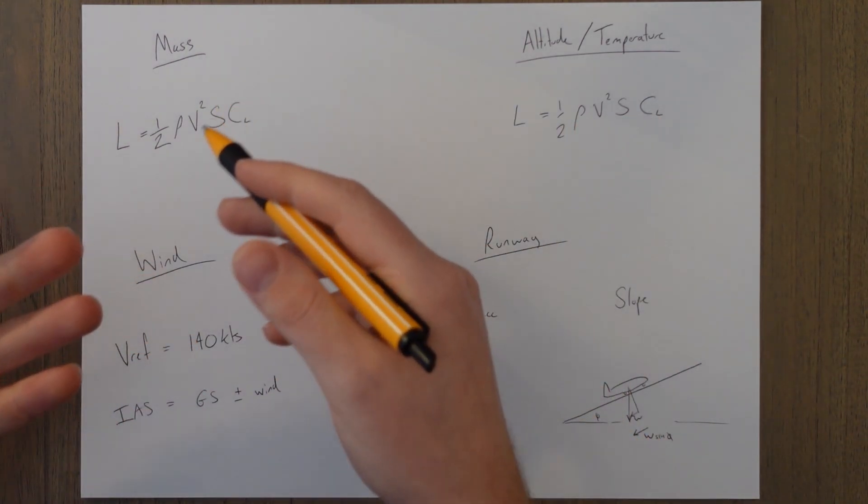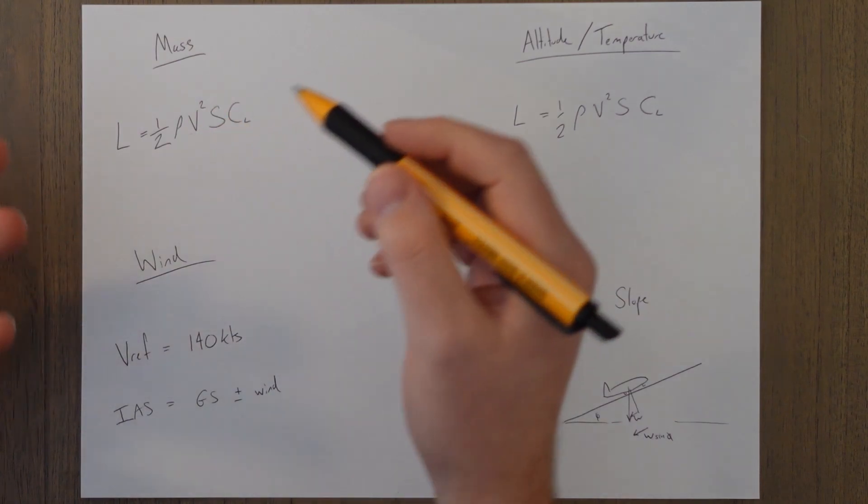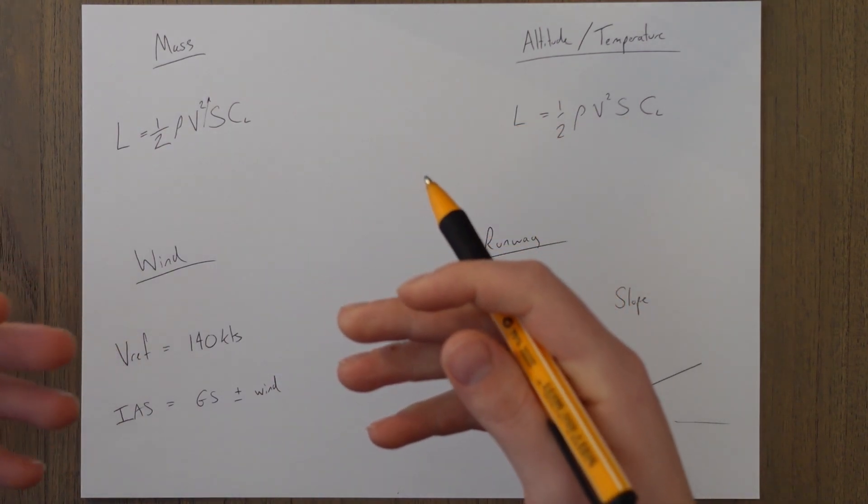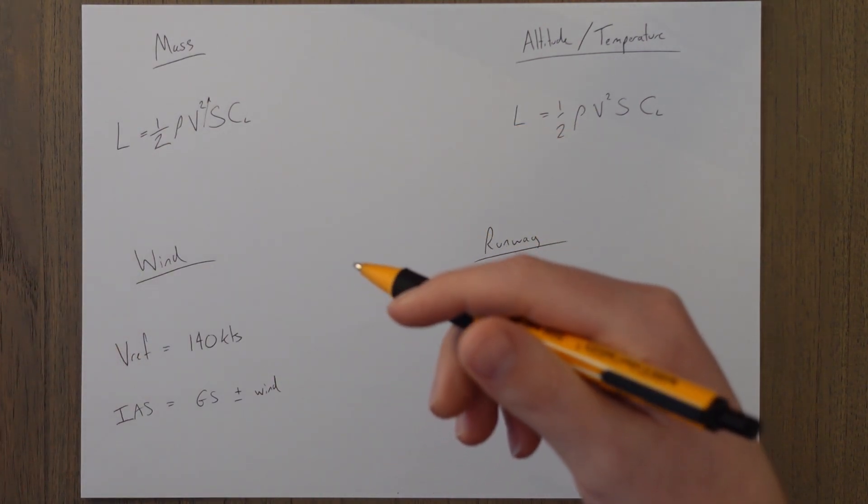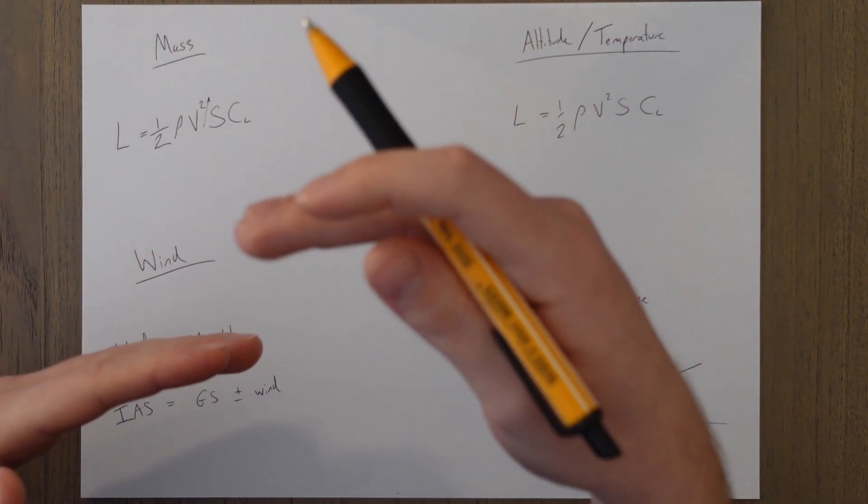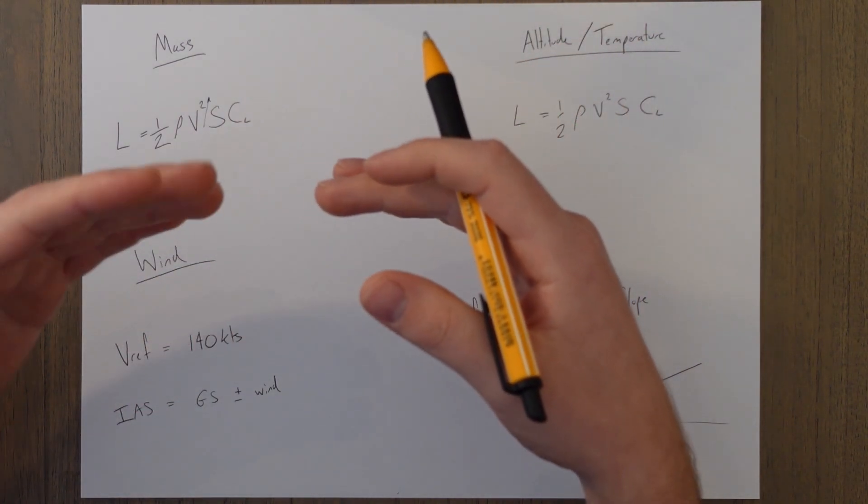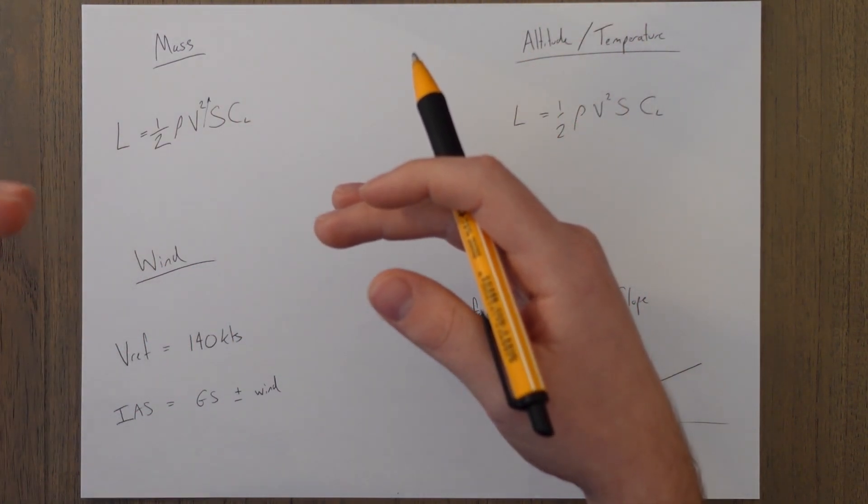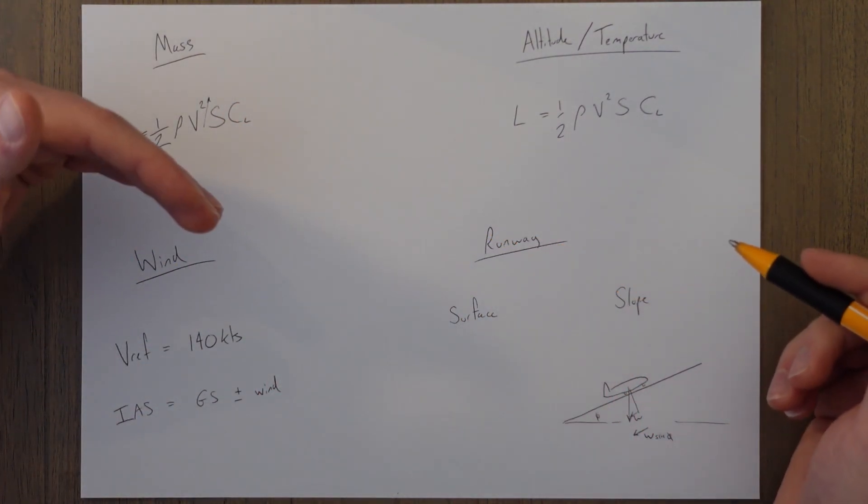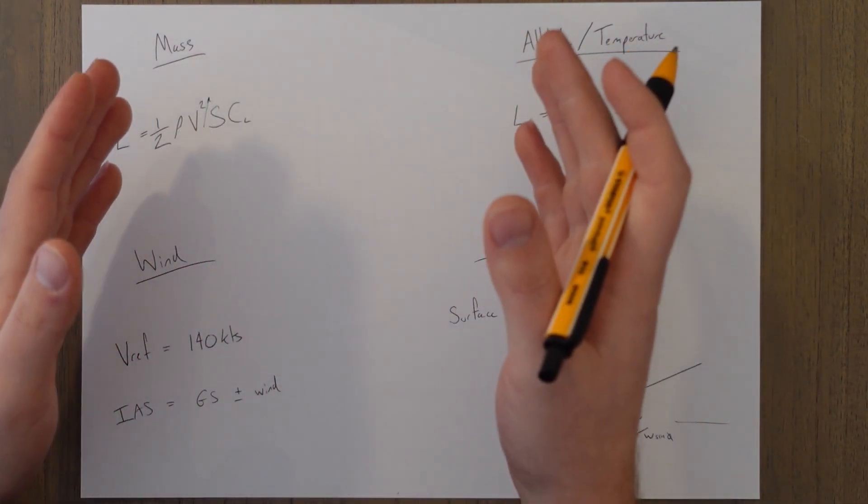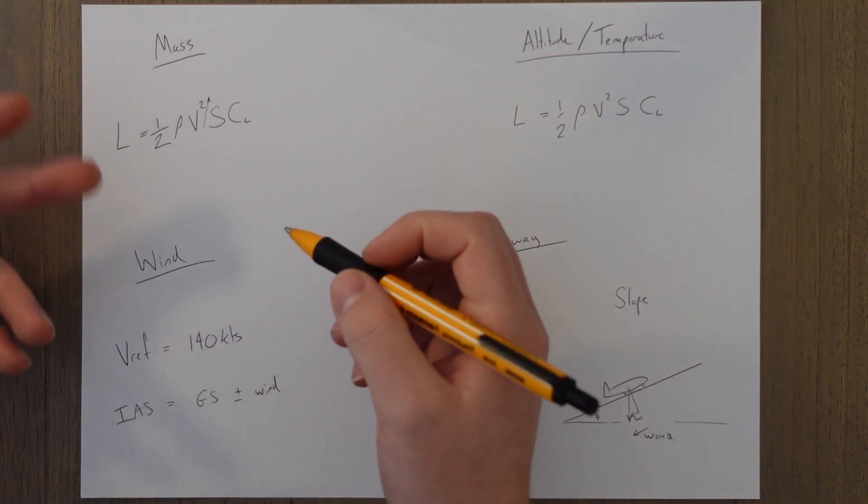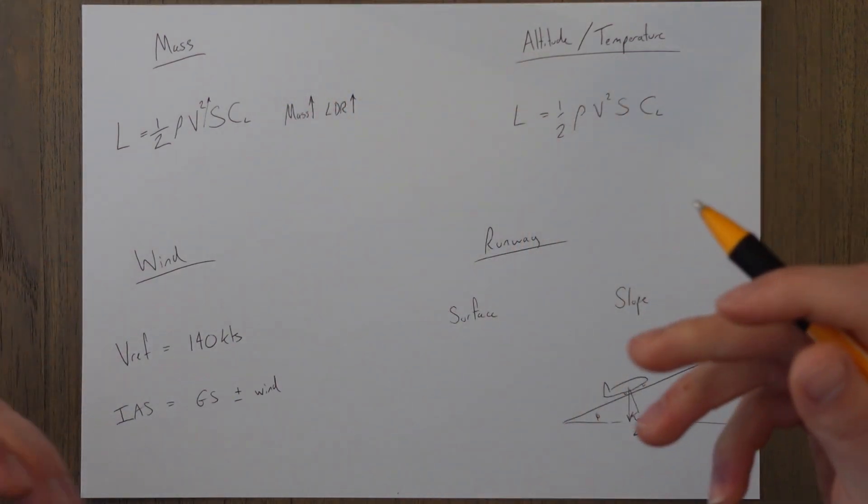So there's various things that will influence our landing distance requirements. If we are heavier then we need to fly faster in order to achieve the correct amount of lift, our stall speed increases in other words. So that means that our speed for V ref is likely to be higher as well because we're taking the higher of the stall speed times 1.3 or the VMCL value. And that faster V ref speed results in a faster touchdown speed and therefore more distance is required in order to slow us down to a stop. So as mass goes up the landing distance requirement also goes up.